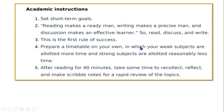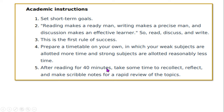Prepare a timetable on your own in which your weak subjects are allotted more time and strong subjects are allotted reasonably less time. For example, mathematics, physical science and English are generally weaker areas — dedicate more time to those subjects. For remaining subjects, spend a little time to quickly read, revise and recall. After reading for 40-50 minutes, take some time to recollect, reflect and make scribble notes — rough notes like a journalist makes for reporting.